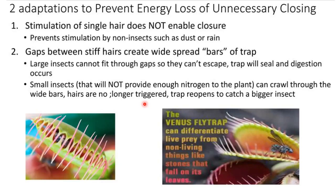The plant would not waste energy on unnecessary closing — it only closes when it can obtain a useful nitrogen source. Let's now watch a video related to how the Venus fly trap catches prey, before moving on to chemical communication.